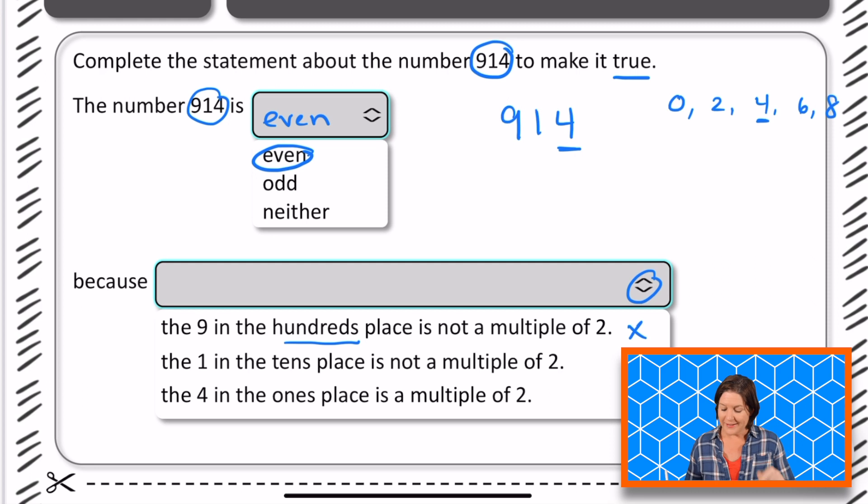The 1 in the tens place is not a multiple of two. Again, is this about the tens place when we are determining odd and even? No, it's about the ones place. So we can eliminate that one.